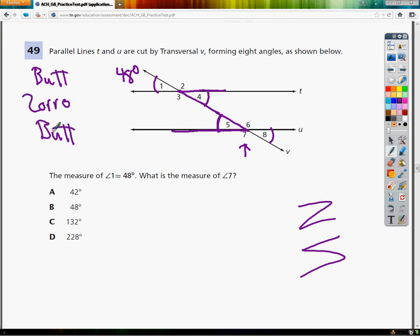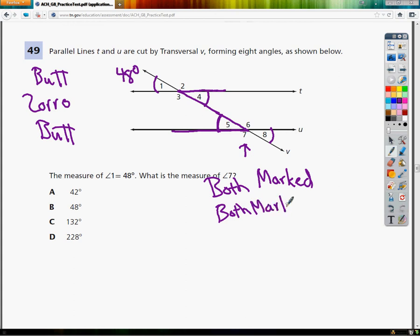Now, the key to butt, Zorro, butt: If both the angles that we're wondering about are marked or both unmarked. So if I was asked about angle one and angle eight, they would fall into this category because they're both marked. Angle two does not have a mark, and neither does angle six. So those would both be considered unmarked angles. If they are both marked or they are both unmarked, the angles are congruent.